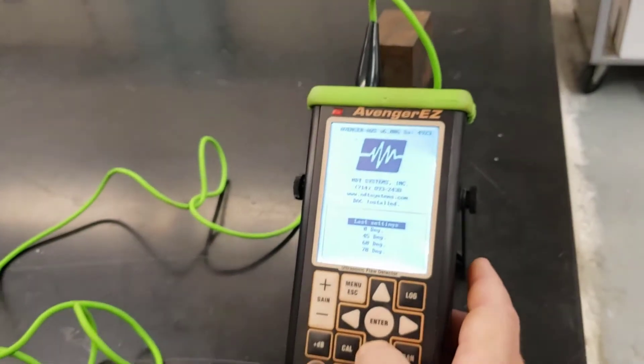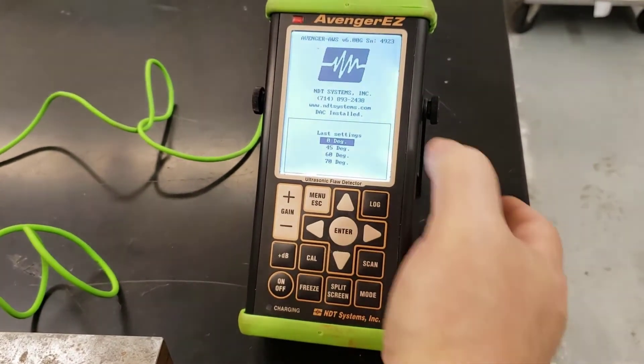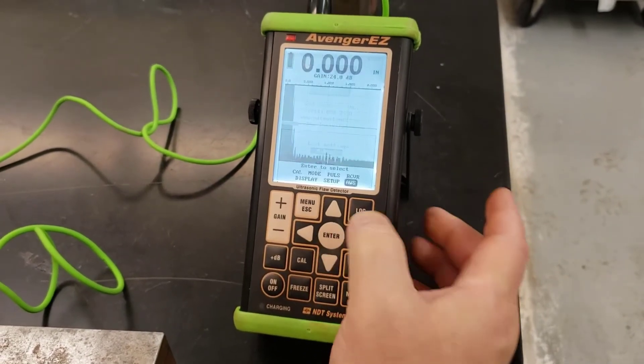First we tell the system that it's at zero degrees. If you know what you were using last time, you can use that last setting, and you can see we also have 45, 60, and 70 degrees. And we simply hit enter.